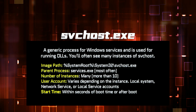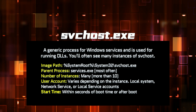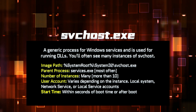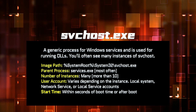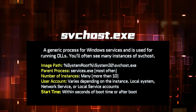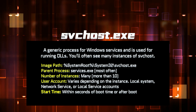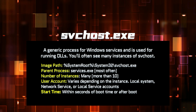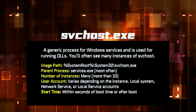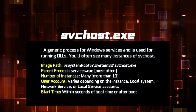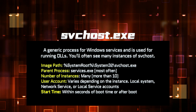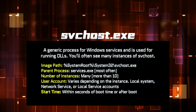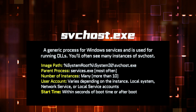svchost.exe is a generic process for Windows services and is used for running service DLLs. You'll often see many instances of svchost. Threat actors often masquerade as svchost and can use it to host malicious DLLs as a service, or run it as a malicious process with the same name or similar spelling. It should be found in System32 for the image path, and the parent process is typically services.exe. There are many instances of svchost, with the user account typically being Local System, Network Service, or Local Service accounts. Windows 10 has some instances running as logged-on users. The start time is typically seconds after boot, though some can be started after boot.